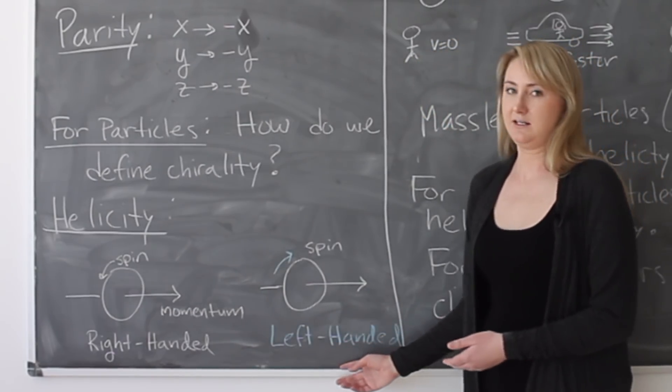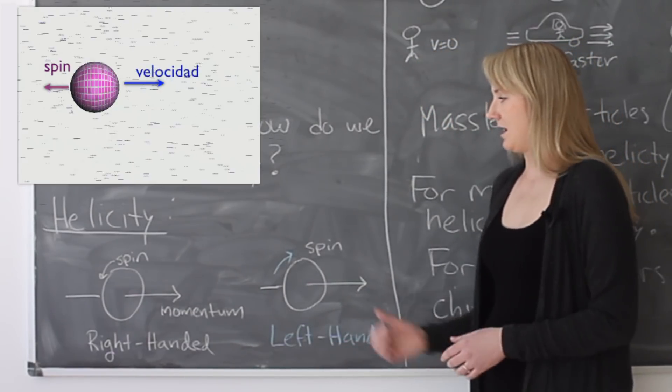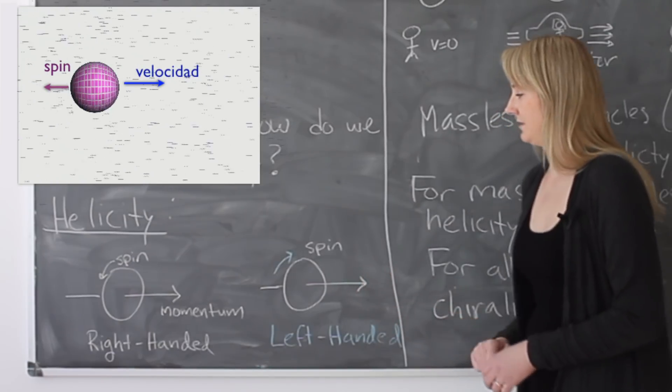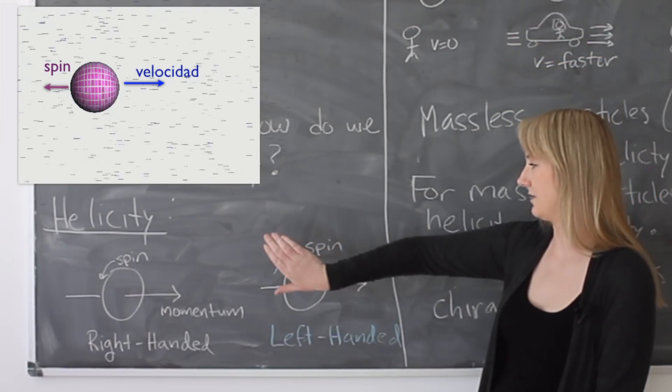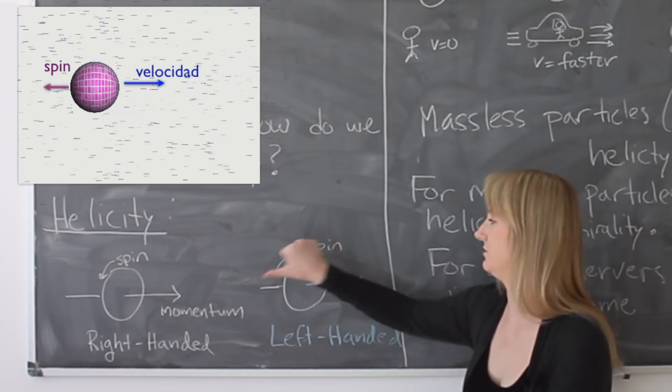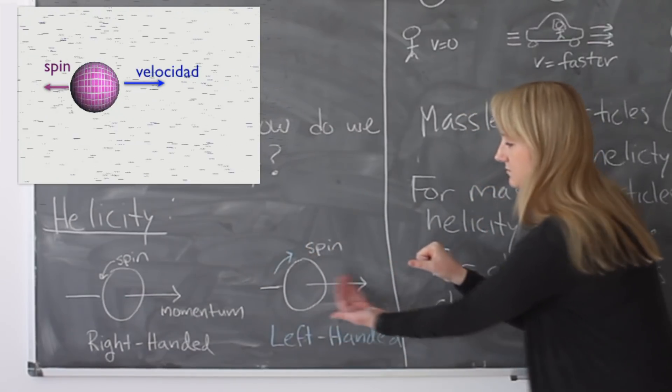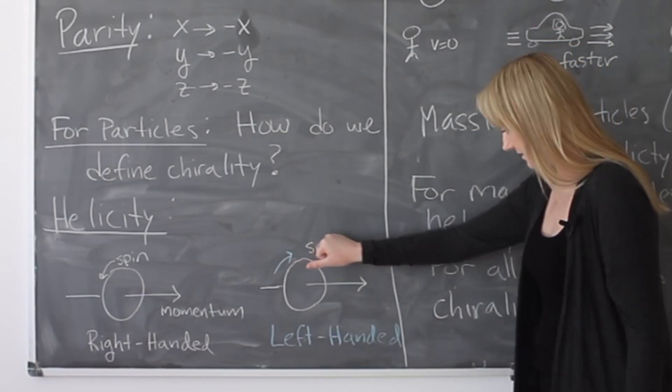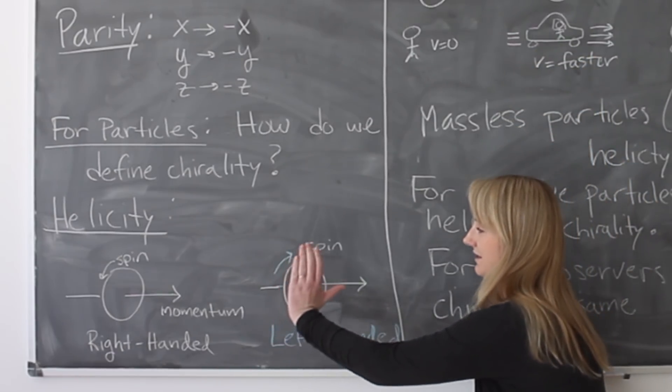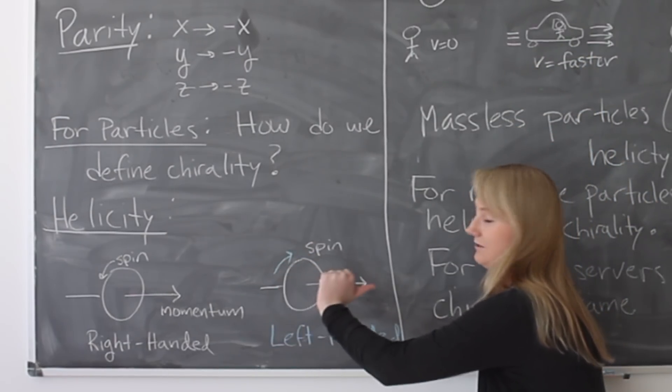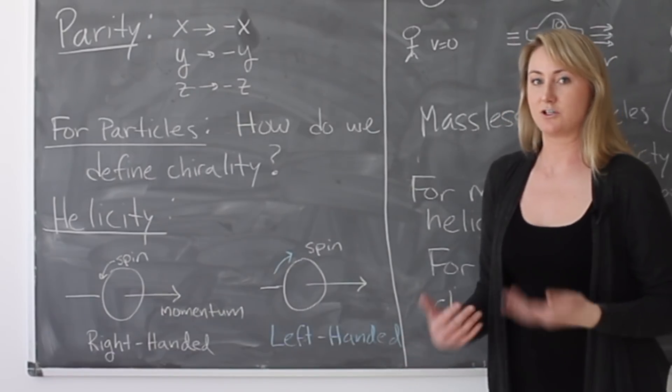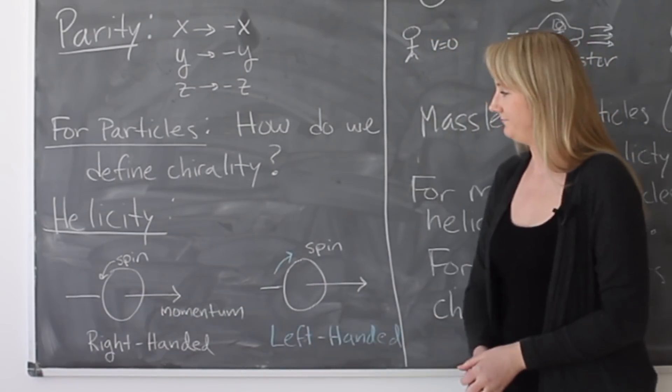So a left-handed helicity particle has its spin going the opposite way. So its spin is going this way. So the direction of the spin is this way, even though it's moving this way. You can see if I take my left hand and I do the direction of the spin, I'm now lined up with the momentum. So that's sort of where we got the terminology for right-handed and left-handed.